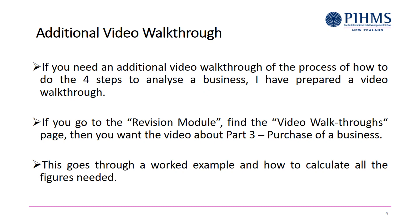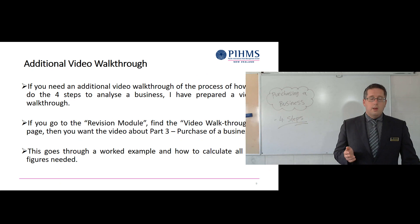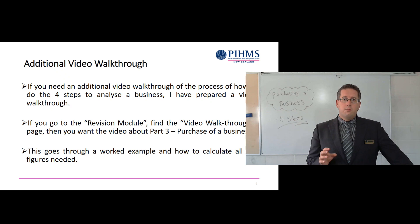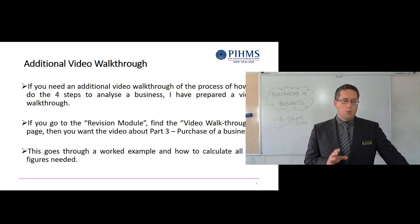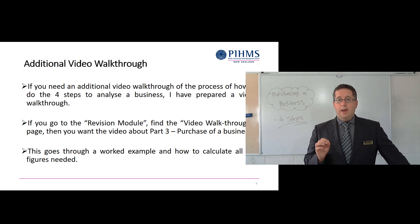If you want to see the actual calculations, I have already done a video walkthrough of these four parts, because this is part of the final exam. You can go to the revision module, find the topic called 'video walkthroughs', and then find the one for 'Part 3: Purchase of a Business'. That video goes through a worked example — the numbers, what to pull from where, what calculations to do, and how to build all the numbers. So that's the perfect place to go if you want to see how exactly to calculate these exercises.